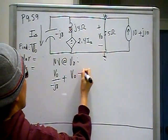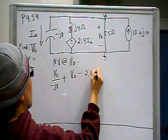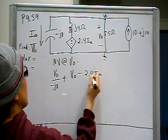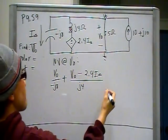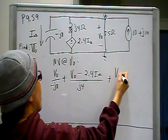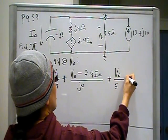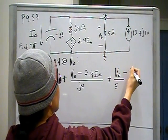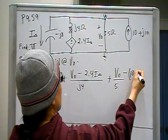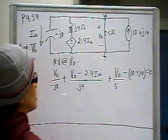So that's going to be V out over minus J8 plus this node right here, V out minus 2.4 I delta, all that over J4 plus V out over 5. And then we have this current source going into the node, which makes it a minus. So minus 10 plus J10.